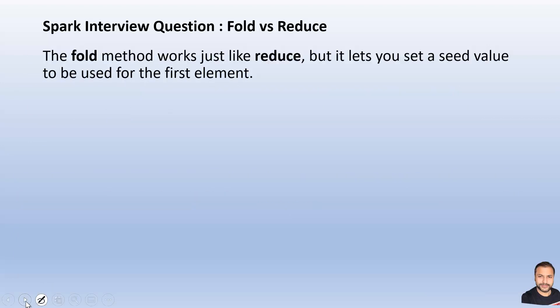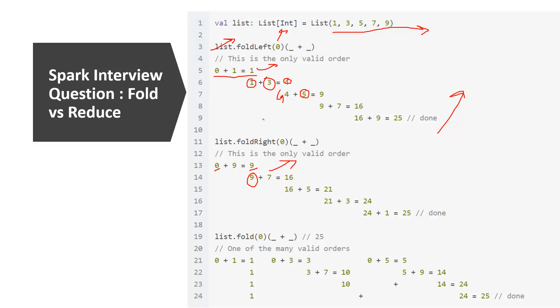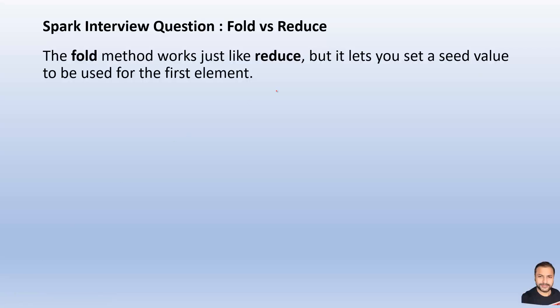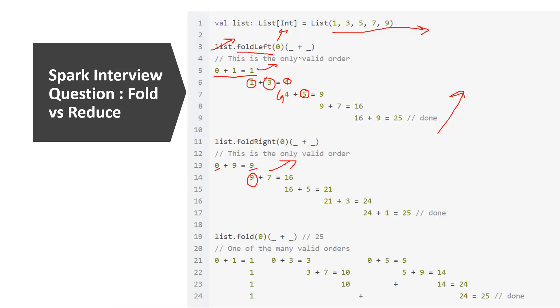Let's understand this from a chart. We have a list on which we've called foldLeft. But first, I want to clarify the only difference between fold and reduce: in the fold API you can set a seed value, and that seed value will always act as the first element — whether you do foldLeft or foldRight, that seed value will always be used as the first element.